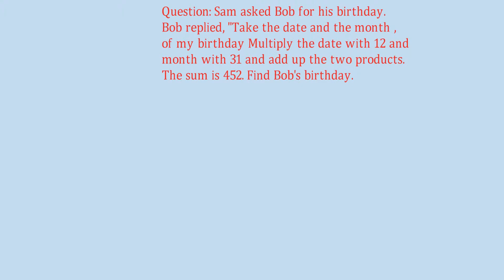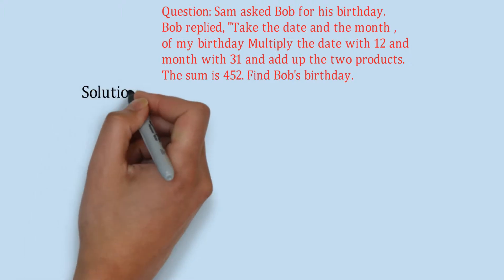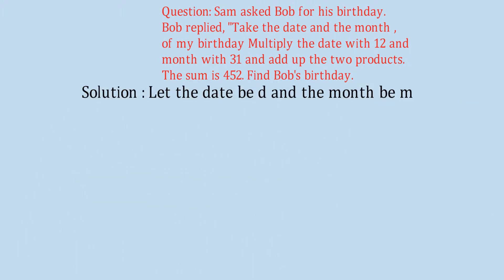These are the special equations through which unknown variables can actually be determined - that's what makes them special. We will understand this from a question: Sam asked Bob for his birthday. Bob replied, 'Take the date and month of my birthday, multiply the date by 12 and the month by 31, add the two products - the sum is 452. Find my birthday.' So the solution: let the date be D and the month be M. As per the question, 12D plus 31M equals 452.